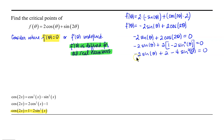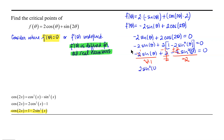I notice a common factor of 2 in each term, and the sine squared term is negative. So I'm going to divide all three terms by negative 2 and rewrite in descending order. That gives us 2 sine squared of theta plus 1 sine of theta minus 1 equals 0.